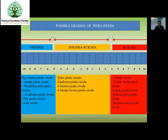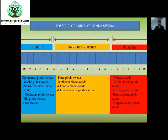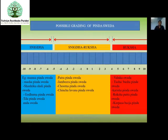When a patient comes with more Kapha Avarana, in that condition we can start with Varluka Sveda. For example, in Amavata patients where Gambhira Vata Vedana is more, Stambha is there, and more Shotha is present, in those conditions we can start treatment with Ruksha Sveda first — initially Varluka Sveda. Next, when the Sama Lakshanas disappear and Nirama Lakshanas appear mildly, that time we can adopt Snigdha Ruksha Sveda.